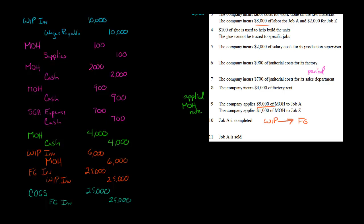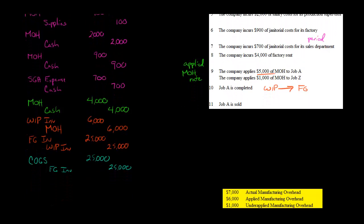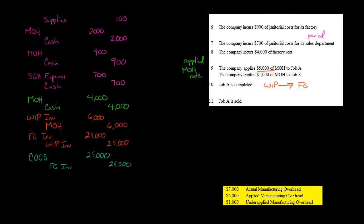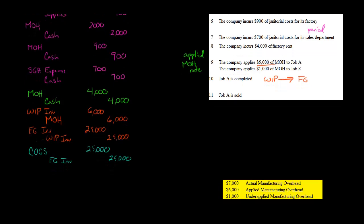You may have noticed there's a difference between actual and applied manufacturing overhead. We applied $6,000, but if you add up all the actual manufacturing overhead costs, the actual was $7,000. So we under-applied manufacturing overhead — we didn't apply enough to jobs, undershooting by $1,000. In the next video, I'll show you how to record journal entries to account for that as well.